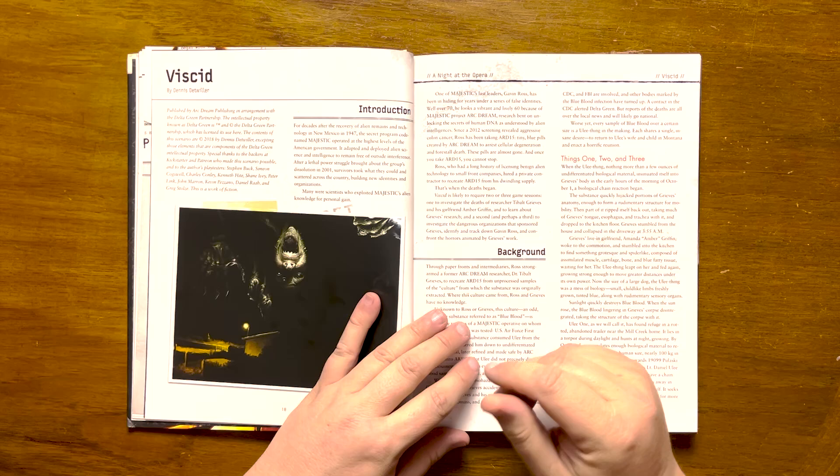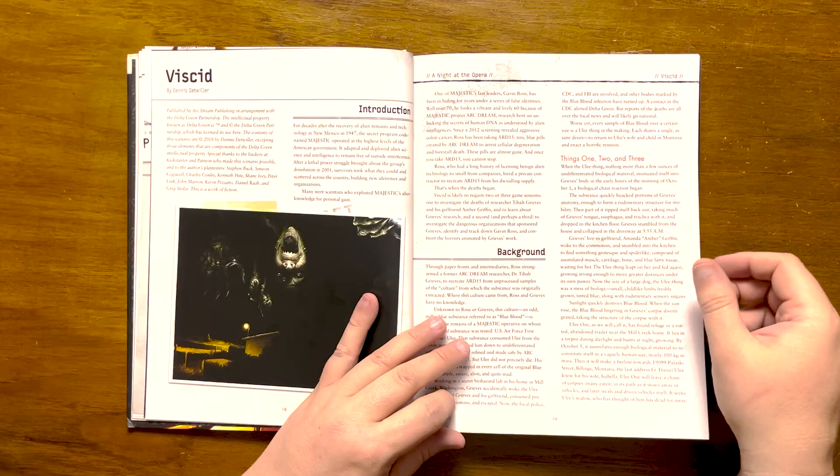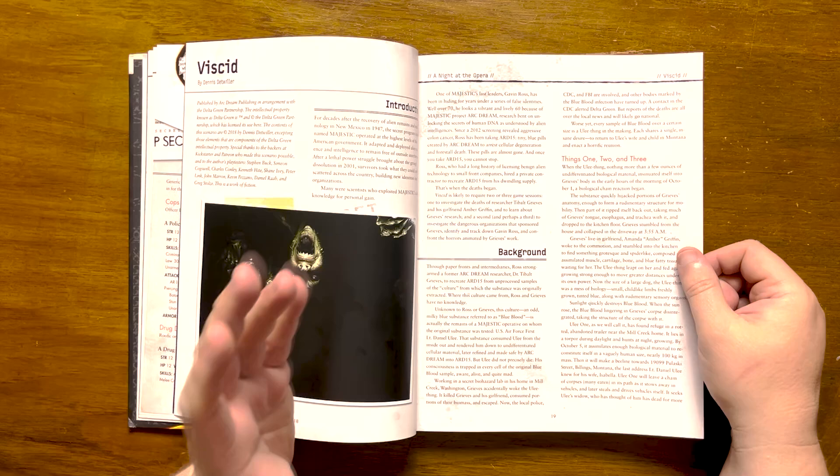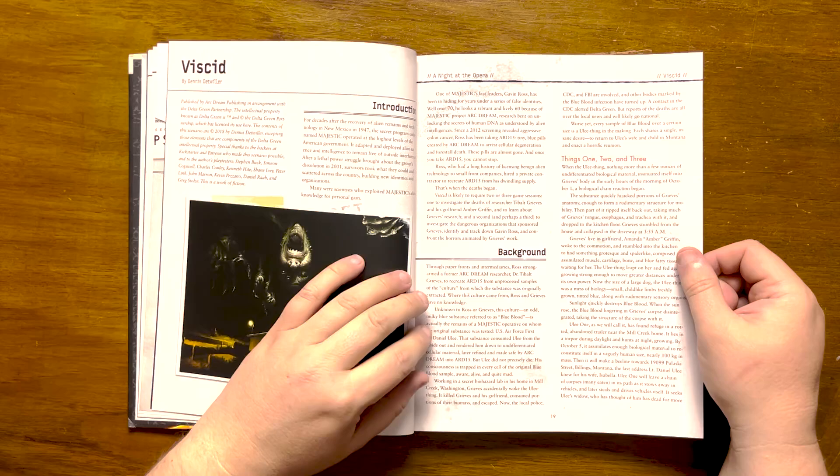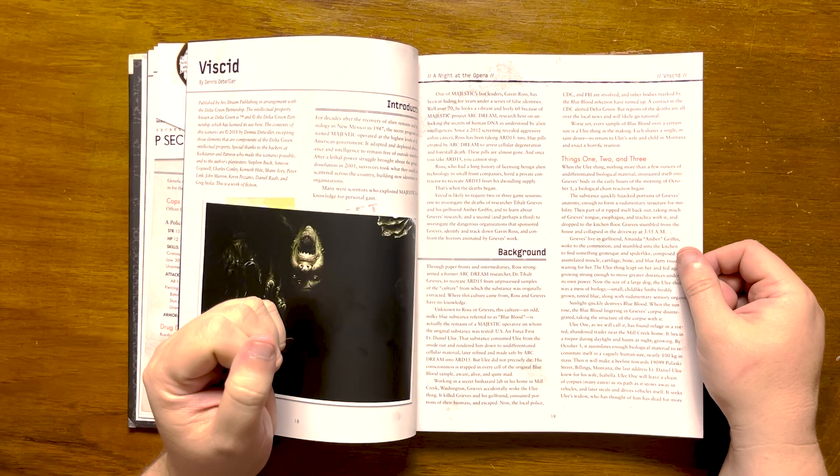Sunlight destroys blue blood, and quickly did so to what remained within Greaves, as he had staggered outside. Uli thing number one has managed to find refuge in an abandoned trailer. It sleeps during the day and hunts at night, eating local pets and assimilating biomass. At one point, it grows big enough that it starts making its way to the address of his wife and child. It will leave a chain of death behind her.